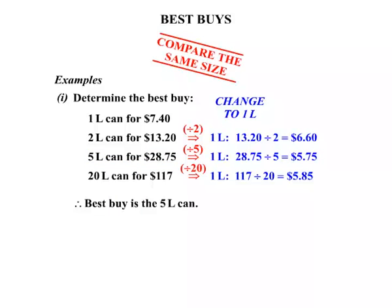Now we need to be a little bit sensible about this. If for example we were talking about cans of paint and we only needed a very small amount — like 1L was plenty — then to buy a 5L can might be a bit silly. Just because it's cheaper per litre doesn't mean we necessarily need a huge size. But for these examples we are just going to work out the cheapest by comparison price.